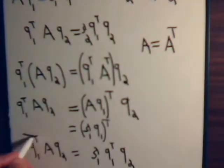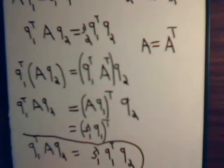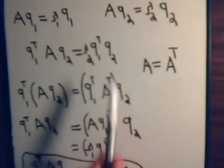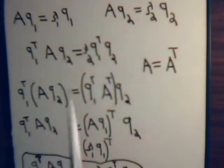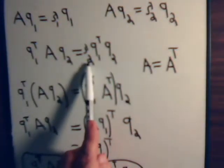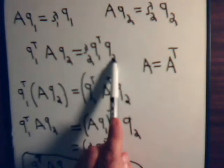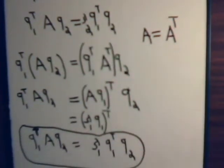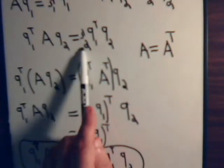So we have this equation involving Q1 transpose AQ2. And here we have, well, it's equal to this quantity, Q2, Q1 transpose Q2. Now down here we're saying, no, it equals this. So what we have then is that this expression here equals this expression here.